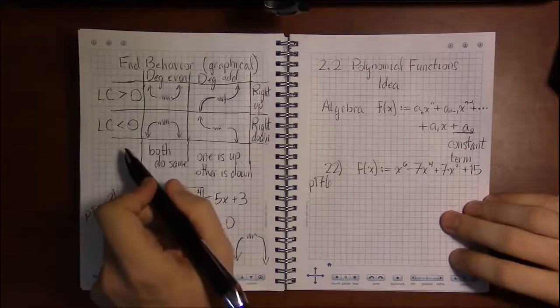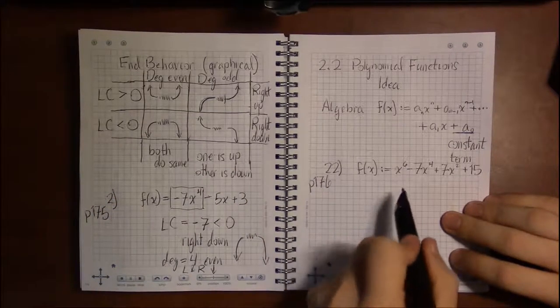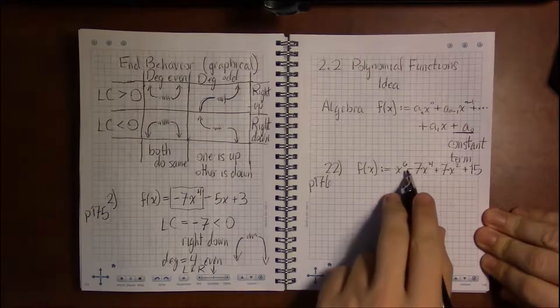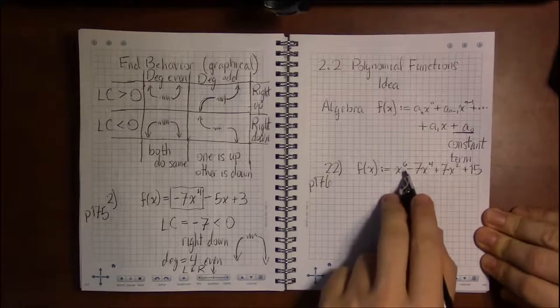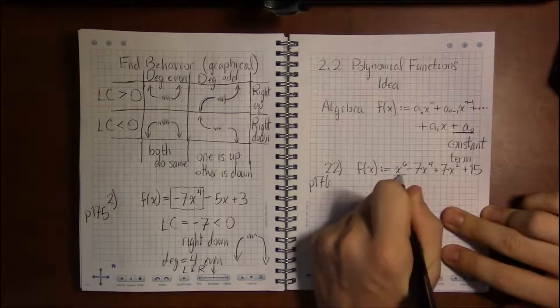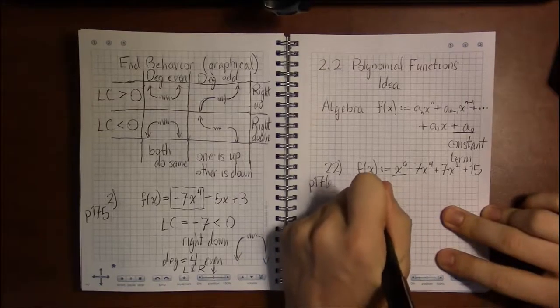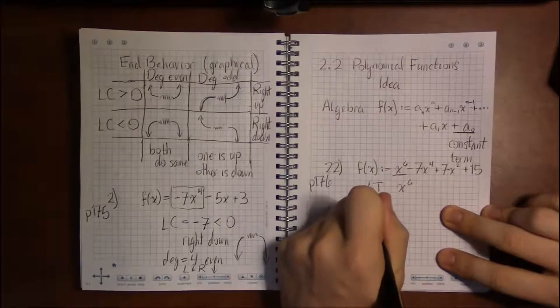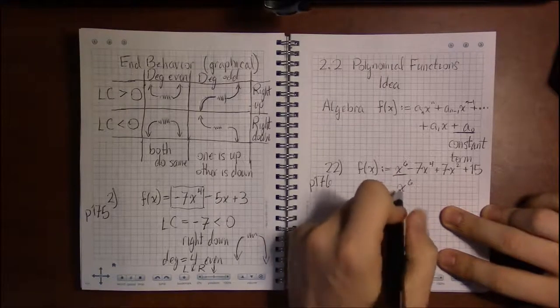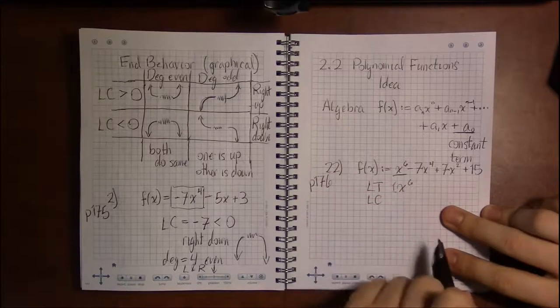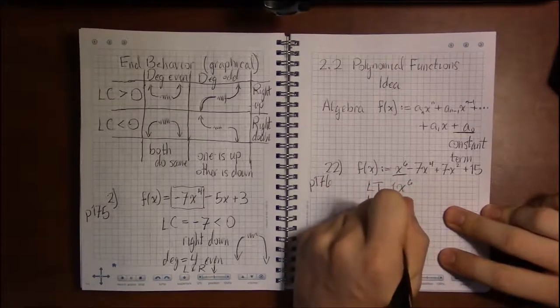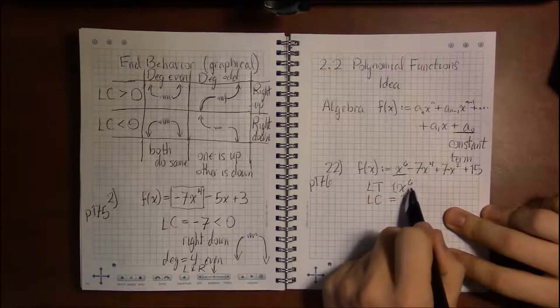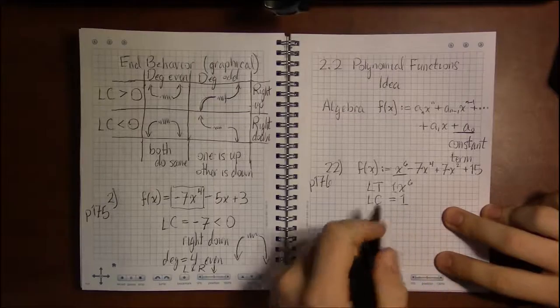Now we mentioned before end behavior is related to the leading term—the leading coefficient and the degree. The leading term is the term that has the highest power of x, so in this case x to the sixth is our leading term. And the leading coefficient is the number out in front. Well, I don't see a number out in front, so I can just put a 1 here because 1 times anything is itself. So this makes the leading coefficient 1.